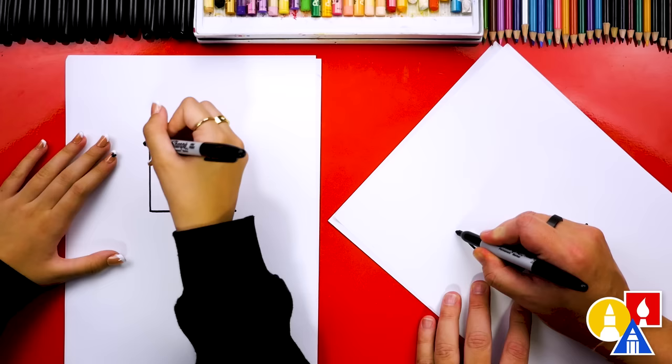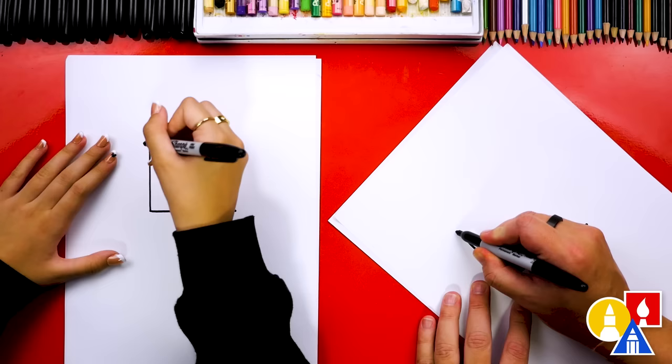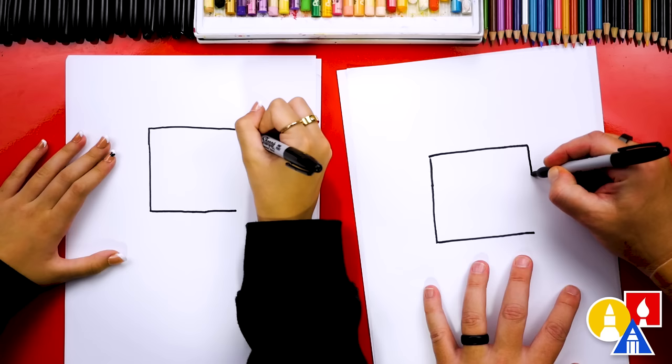There you go. You could use a ruler if you wanted to really measure, but I think it's fun just using our eyes to guess. We're gonna draw the top now, and then connect the top down to the bottom to complete our square. Nice! That looks really cool.